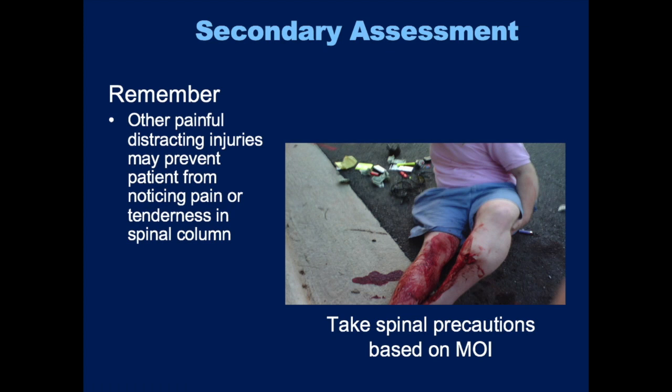A lot of these patients have multiple other injuries if the mechanism was significant enough. If, for example, a patient has an injury like a significant lower leg fracture, that's considered a distracting injury. They're not going to feel a minor fracture to their C-spine or thoracic spine. So despite the fact that they're saying they don't feel any pain in their back or neck, it could well be because they're so distracted by the other fracture. You need to treat it as if they have the potential for a spinal injury.